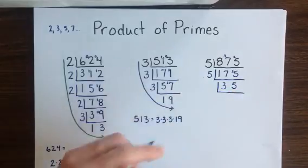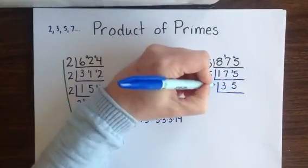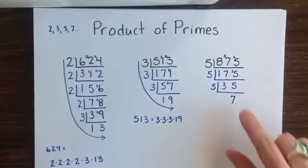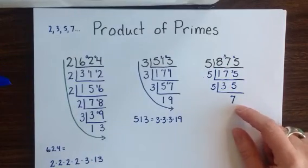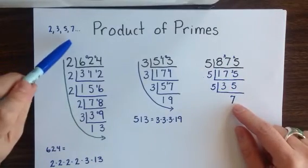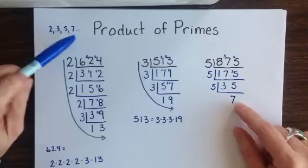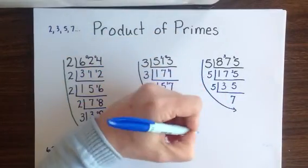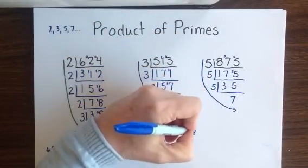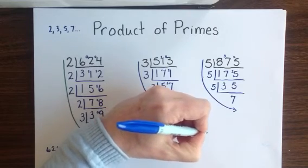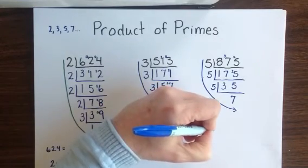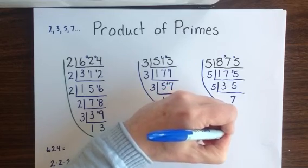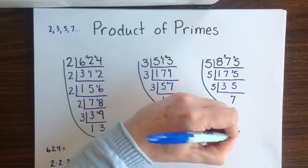Again faced with a quotient that ends in a 5, I will divide by 5 one final time, getting a final quotient of 7. Since 7 is a number on our list of primes, I am done. The number 875, when written as a product of primes, is 5 × 5 × 5 × 7.